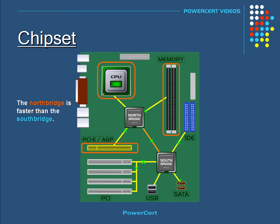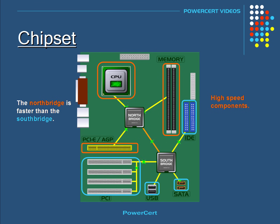The slower South Bridge communicates with the PCI bus, SATA and IDE connectors, and USB ports, and they don't need to be as fast as the other components. So the higher speed components are connected to the North Bridge, and the slower components are connected to the South Bridge.